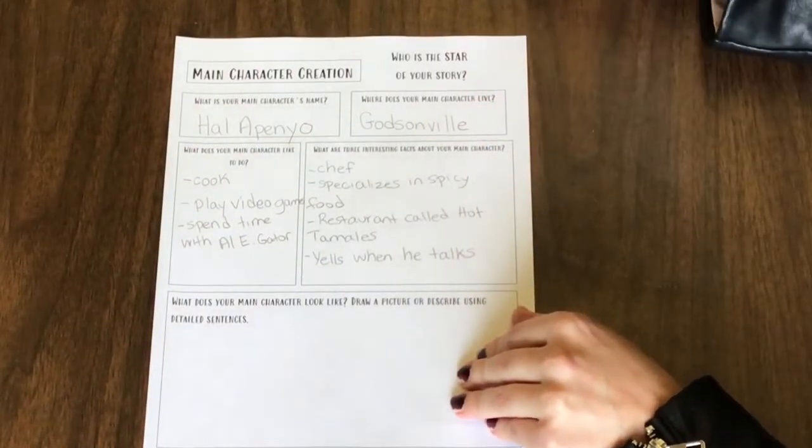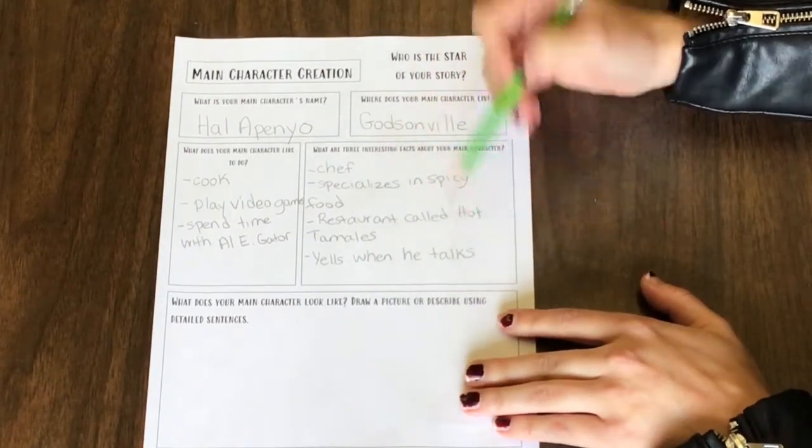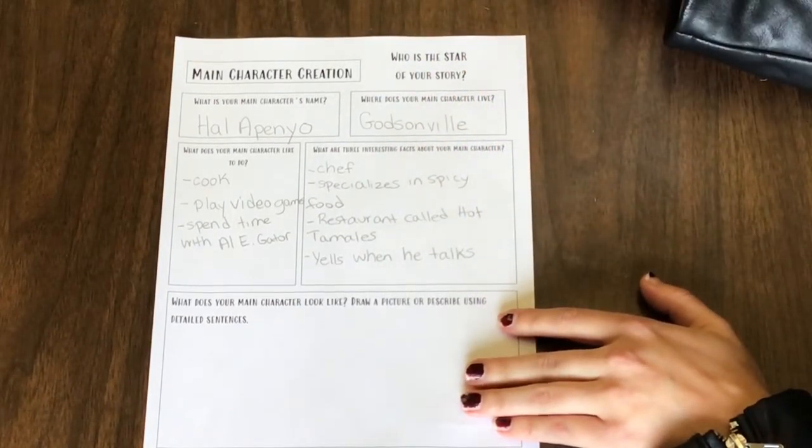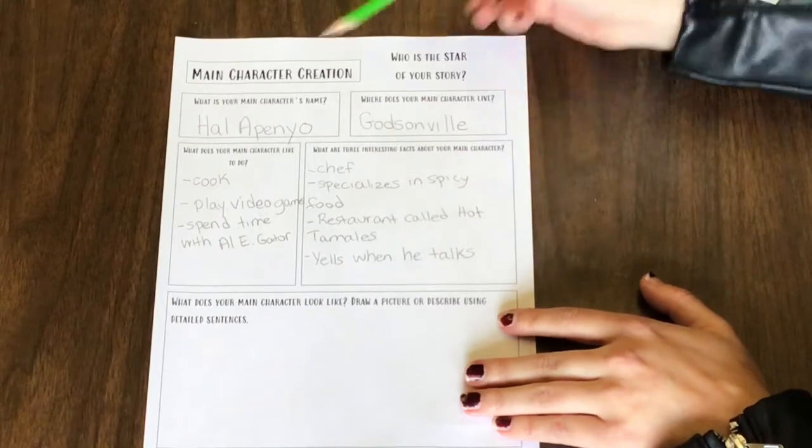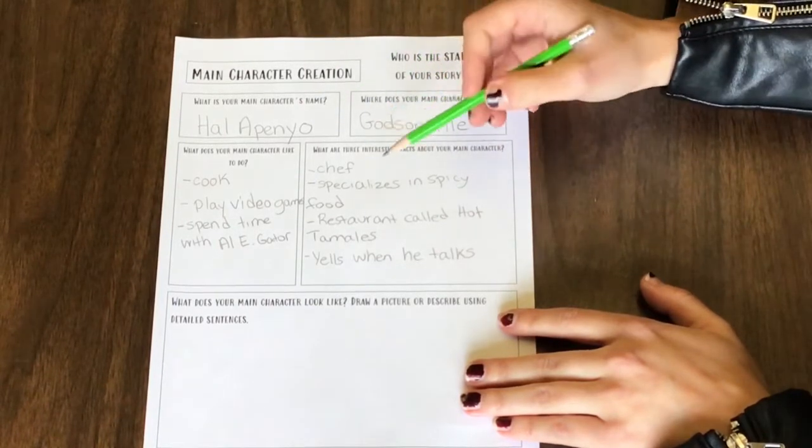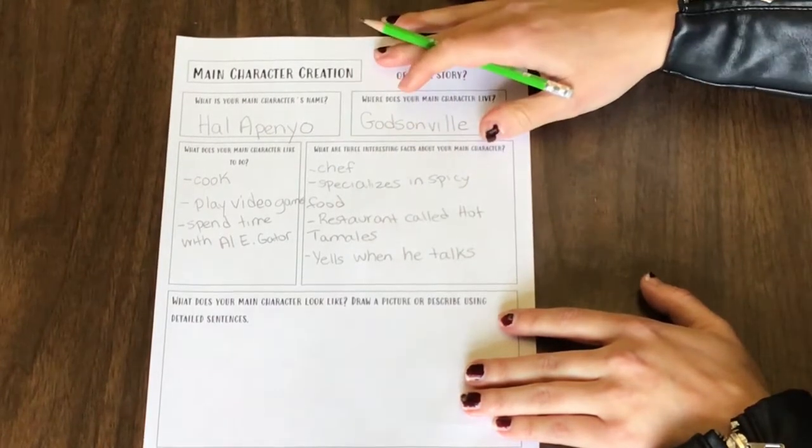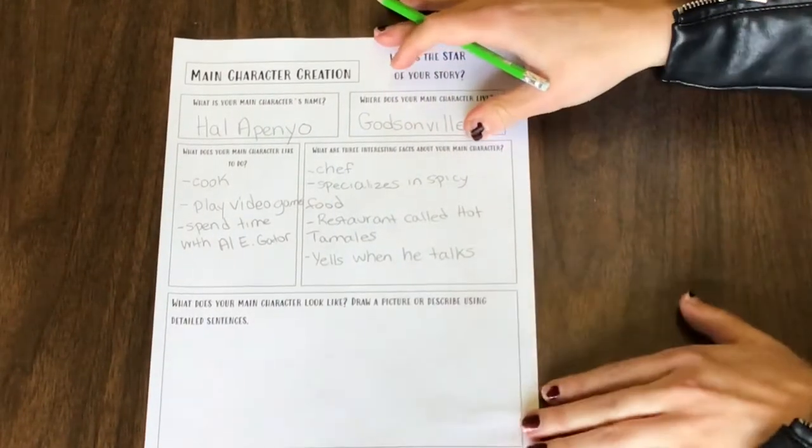So those are all my details about my main character. Some of them are connected and some of them are a little bit separate. They're kind of quirky and interesting because I have to spend a whole story talking about this character. So I don't want to just write things like jalapeno is nice. Just about every single person on planet Earth is nice.